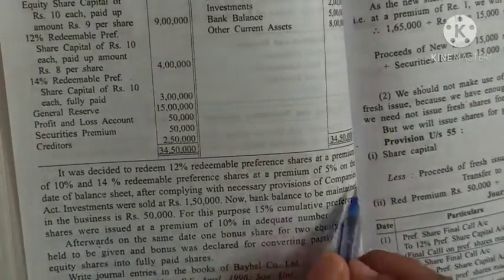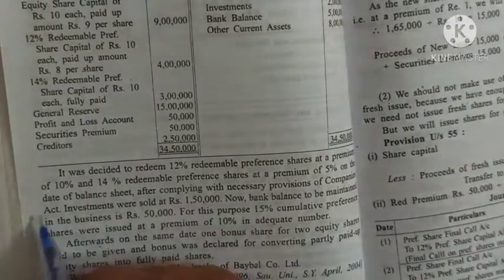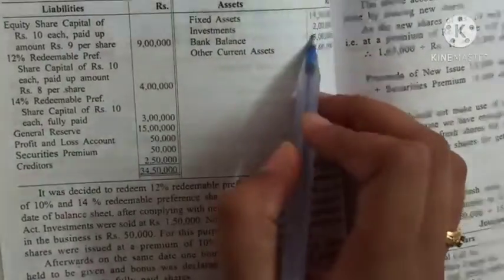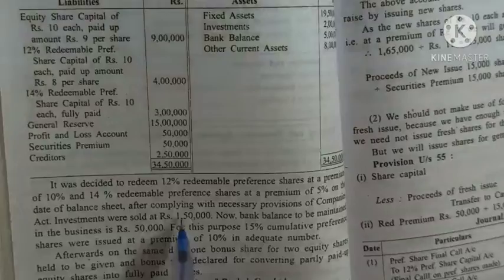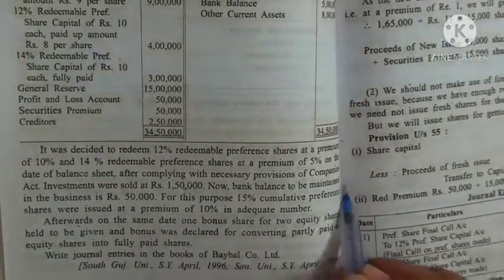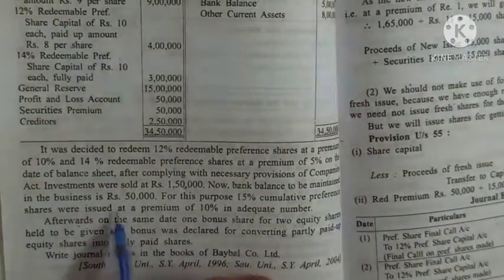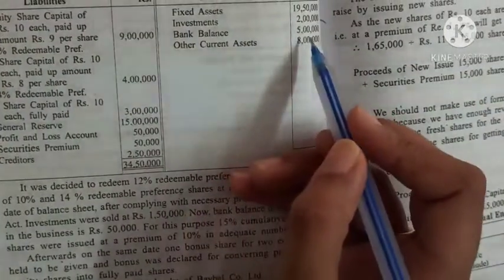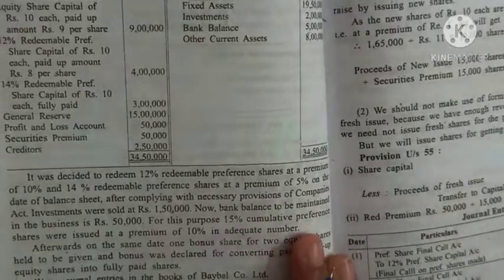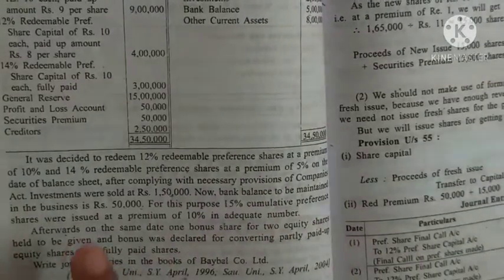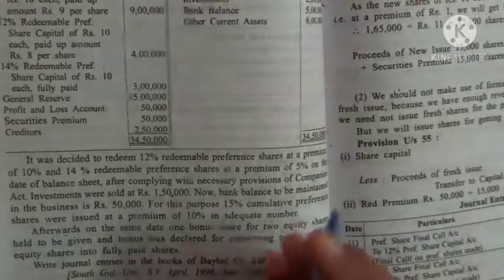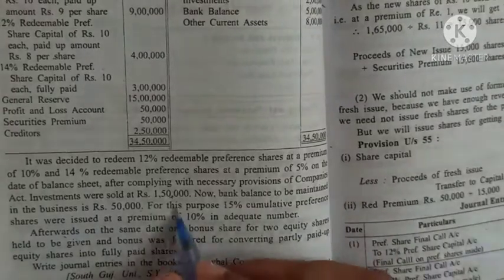After complying with the necessary provisions of the Companies Act, investments worth 2 lakh rupees were sold for rupees 1 lakh 50,000. The bank balance to be maintained in the business is 50,000. Opening bank balance is 5 lakh rupees, and 50,000 must be maintained. So here we need to make a bank account and find the amount of the issue of new shares.